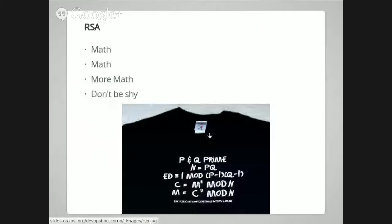RSA uses prime numbers, because prime factorization is a really hard problem. You choose numbers that are hundreds of digits in length, and it's very computationally intensive to factor them. Primes are very cool.